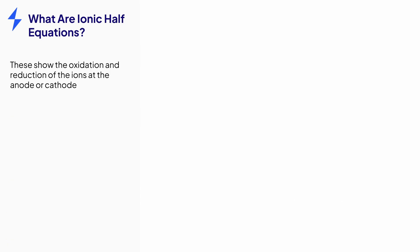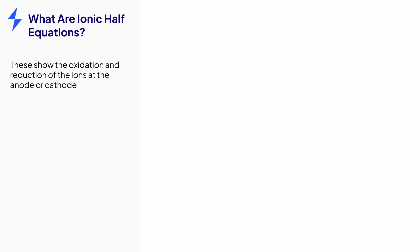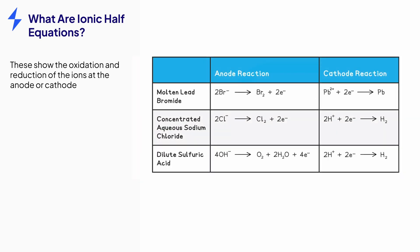Ionic half equations show the reactions that happen at each electrode. One half equation will show the gain of electrons — known as reduction — at the cathode, and the other will show the loss of electrons — known as oxidation — at the anode.